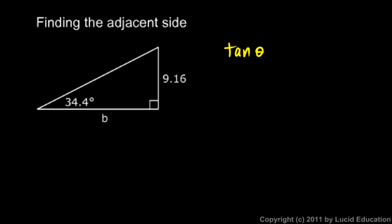Once again, the tangent of an angle is always the length of the opposite side divided by the length of the adjacent side. Take this concept and apply it to this triangle. Write that down mathematically: the tangent of this equals this over this. In this particular case, the tangent of 34.4 degrees equals 9.16 over b.